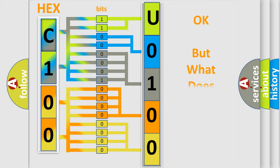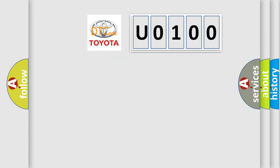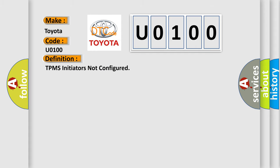We now know in what way the diagnostic tool translates the received information into a more comprehensible format. The number itself does not make sense to us if we cannot assign information about what it actually expresses. So, what does the diagnostic trouble code U0100 interpret specifically for Toyota car manufacturers?